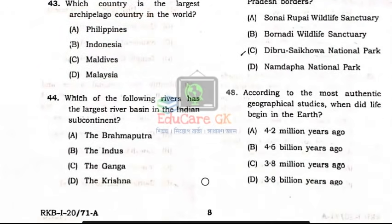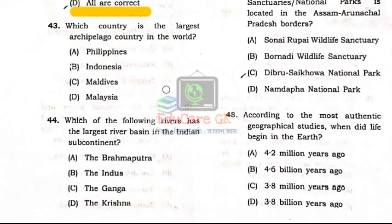Next question. Question Number 43: Which country is the largest archipelago country in the world? The answer is Option B: Indonesia. Indonesia is the world's largest archipelago country.